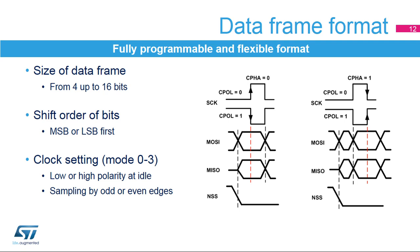There are a few controls used to set up the data format. Users can define the data frame size and the transmit order of the shift register. The clock can be set to one of four basic configurations defined in the Motorola SPI specifications. The combination of two bits controls the polarity and phase of the clock signal. When the phase control bit is cleared, data bits are sampled on the odd clock edges, and the even clock edges synchronize the shifting of the next bit onto the data line. This is the opposite when the phase control bit is set. The clock polarity bit defines the idle state of the clock signal and which clock edge is used for data sampling or shifting.